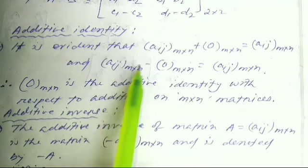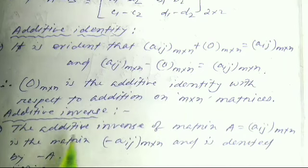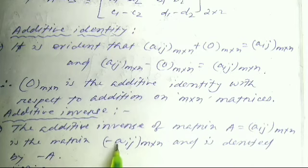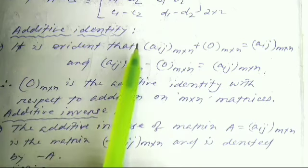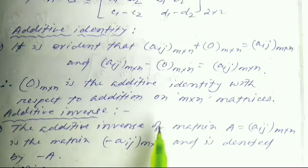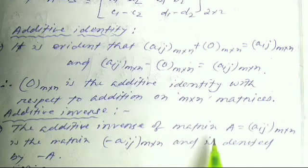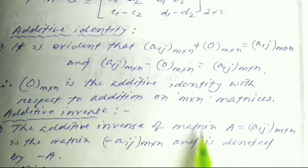Additive inverse: The additive inverse of a matrix A of order m×n is the matrix −A of order m×n. This means when matrix A is added to −A, the result is the zero matrix. So −A is called the additive inverse of A, and the additive inverse of matrix A is −A.